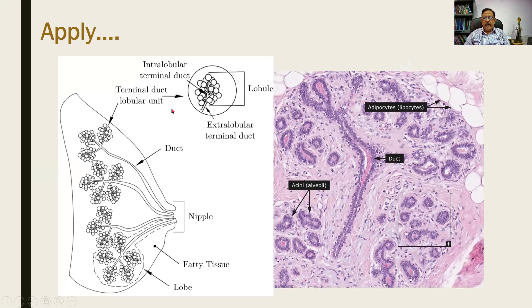I would like you to apply this diagram showing the ductules and the acini or alveoli — the same structures we discussed earlier. This is the histological counterpart. You can see the duct supported by a fibrocollagenous stroma, and these are the glands of the acini. Please remember this because subsequently you will see what changes occur in malignancy.